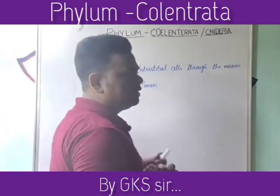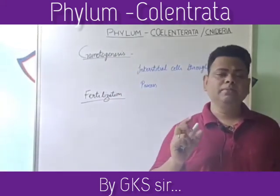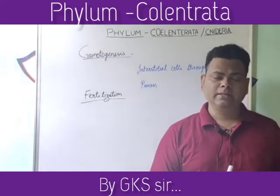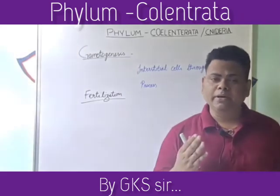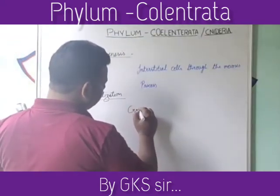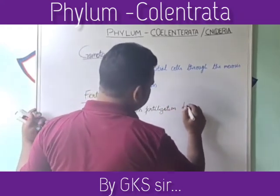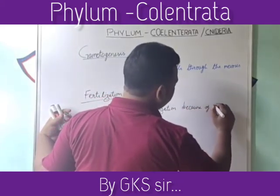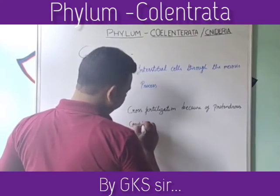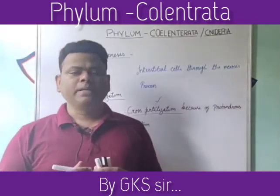In the fertilization process, although coelenterates are hermaphrodite, they show a protandrous condition. Protandry means male and female sexual organs do not develop at the same time, so cross fertilization occurs — self fertilization is not possible. Therefore cross fertilization is found because of the protandrous condition.